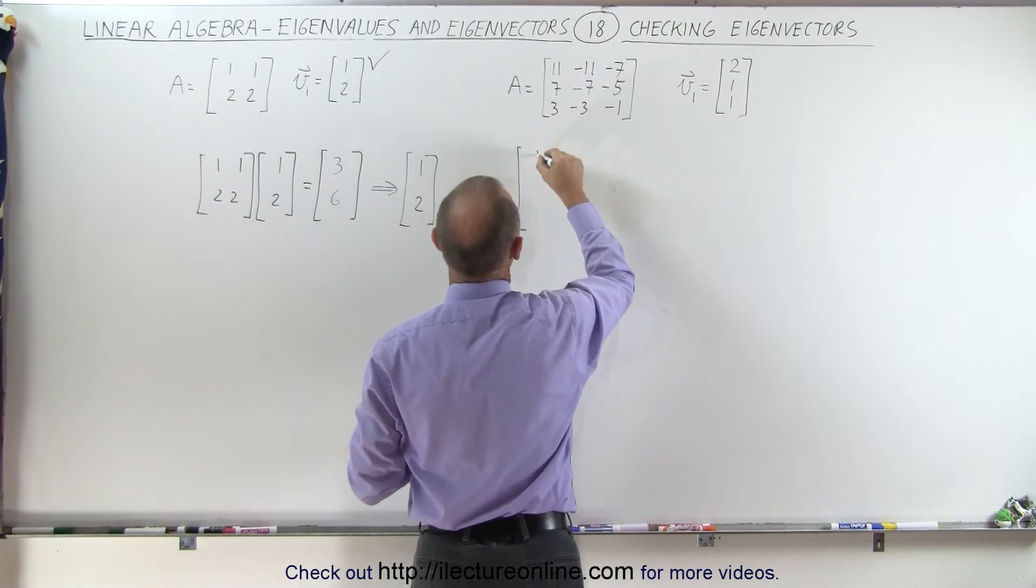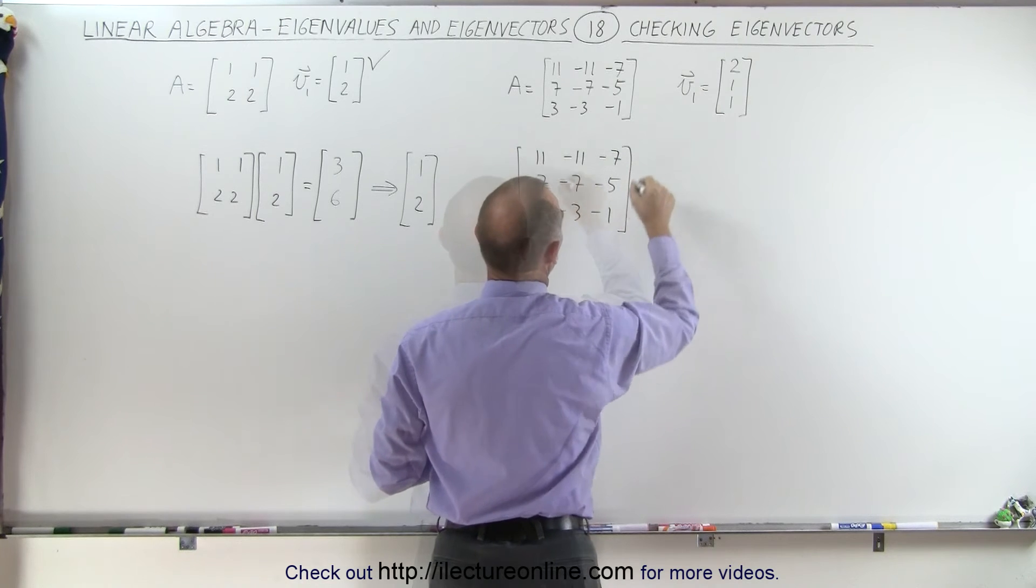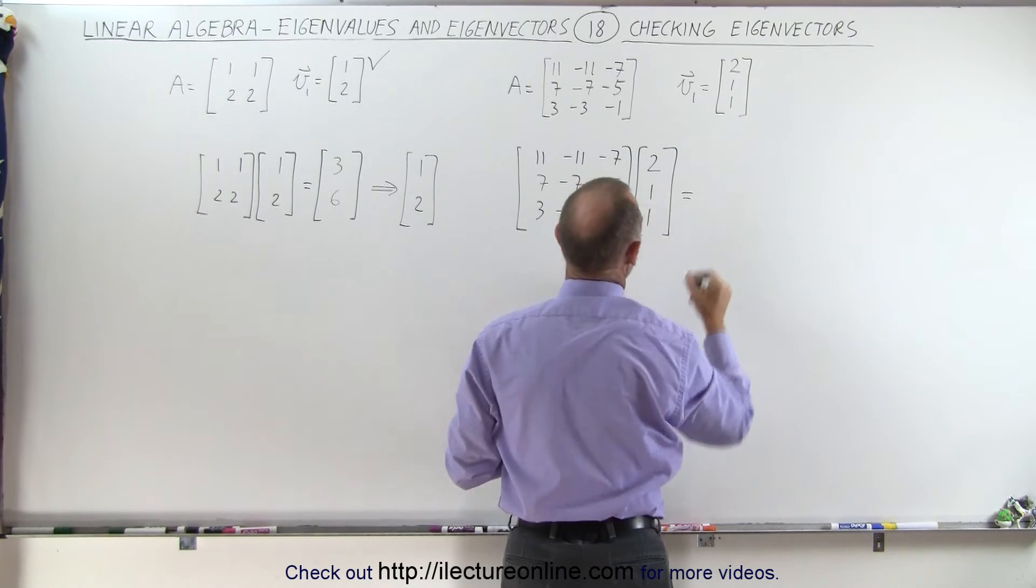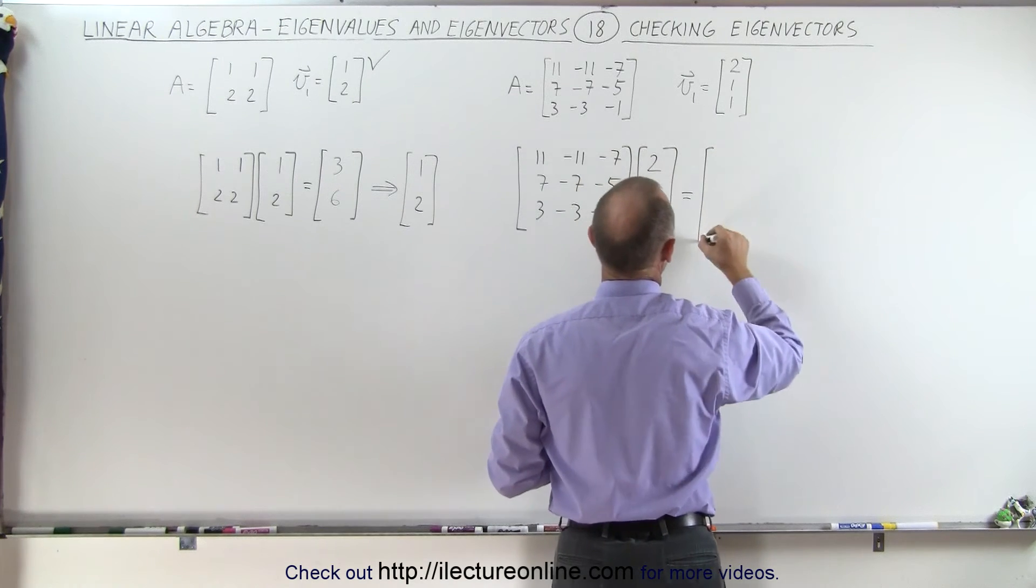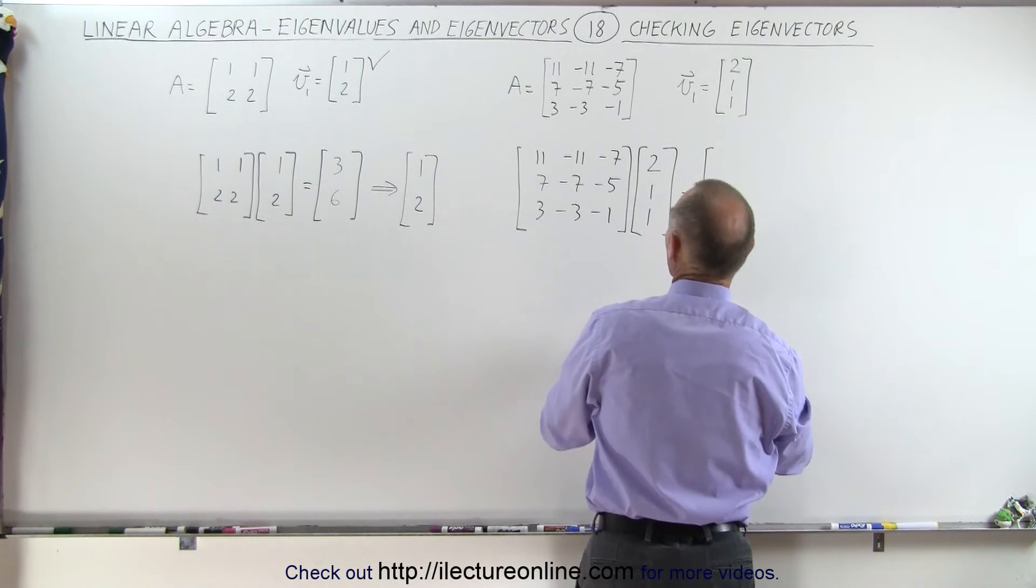So this will take a little bit longer, it's a bigger matrix but it should work. We multiply times the eigenvector 2 and 1 and let's see what we get. So again this will end up with a 3 by 1 vector and let me expand a little bit so you can see what's going on.